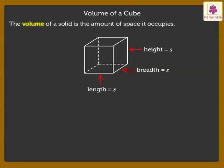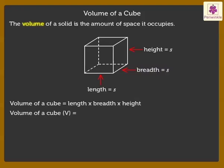We get the volume of a cube by multiplying its length, breadth and height. Thus, volume of a cube is equal to side into side into side, which is equal to S into S into S, is equal to S cubed.